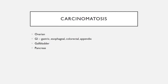With that discussion, we'll move on to carcinomatosis and metastatic disease. Some of the most common primary tumors do this through local spread into the peritoneum, and that would be ovarian cancer, GI malignancies — most commonly gastric, esophageal, colorectal, and appendix — as well as the gallbladder and the pancreas.